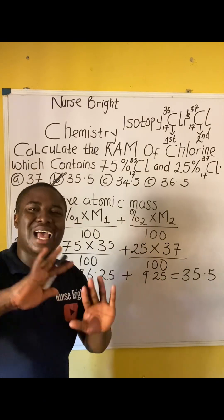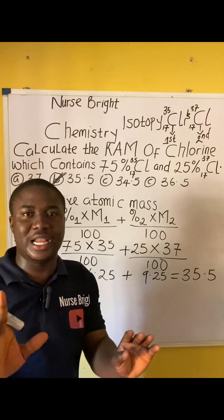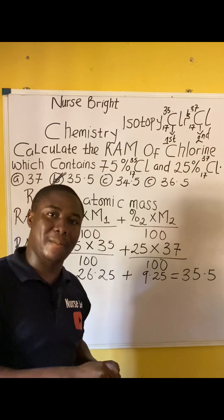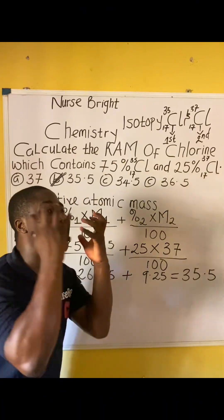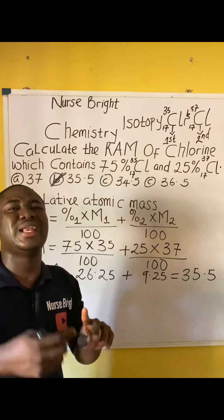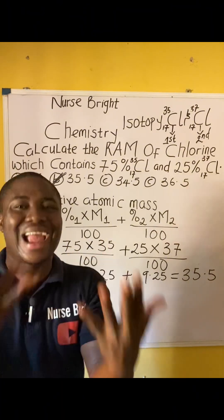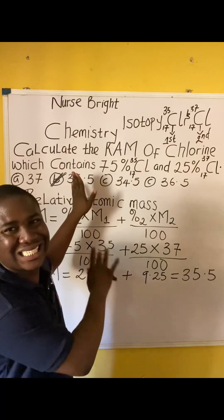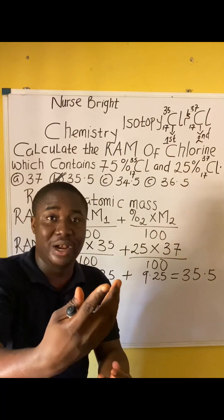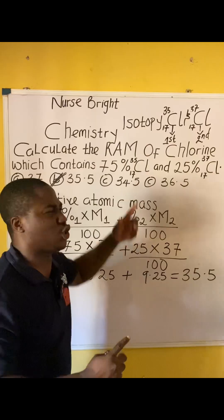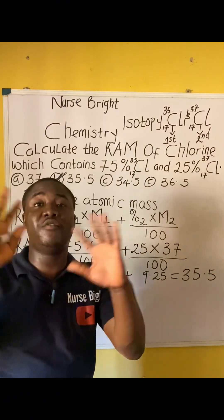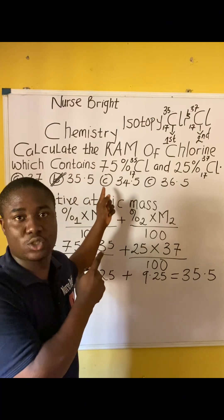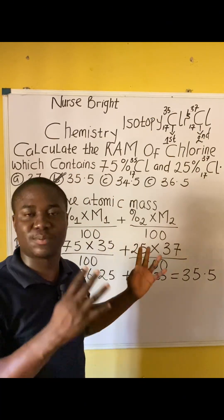You can see how questions under this aspect can be solved without stress — they are all very easy. There are still other diverse ways questions can come under calculating relative atomic mass of isotopes: we have the one with percentages as seen here, and also the one where they give you a ratio. I already have full video lessons on my channel covering all of these aspects.